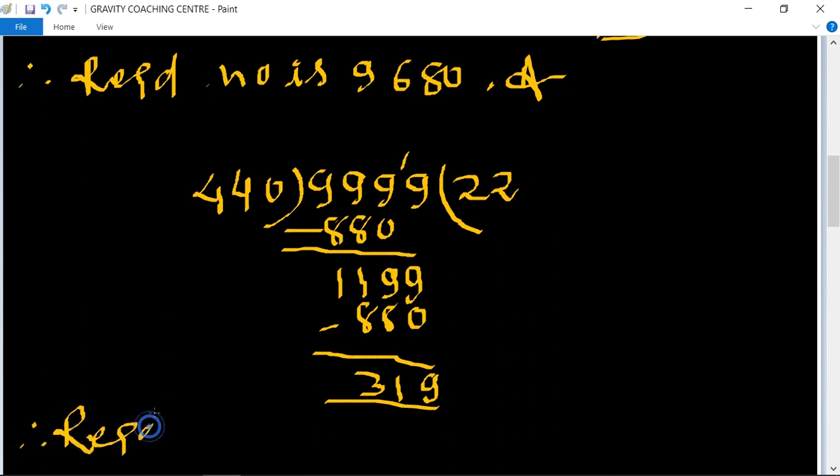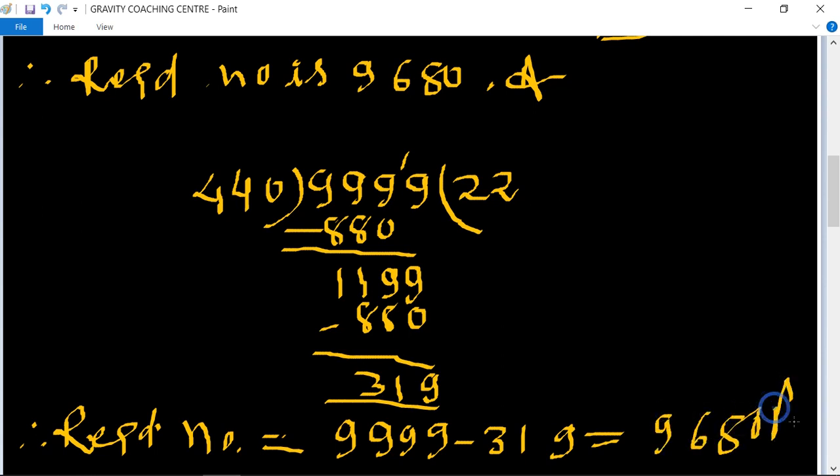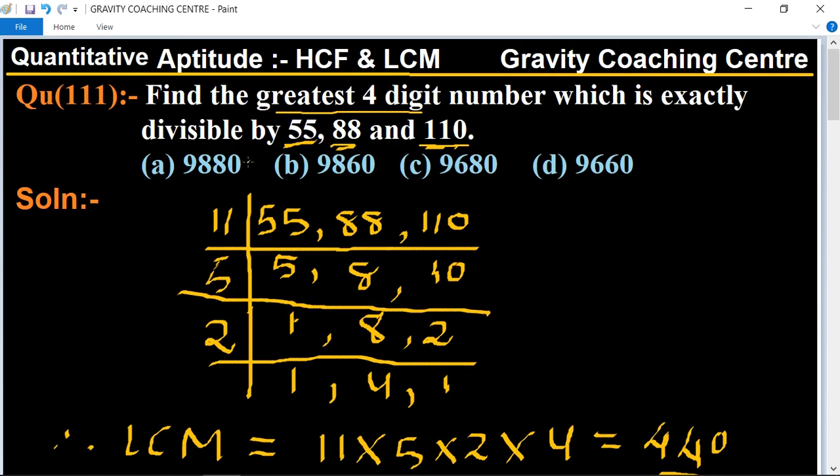Therefore required number equals 9999 minus 319, which equals 9680. So option C is the correct answer. Thank you very much.